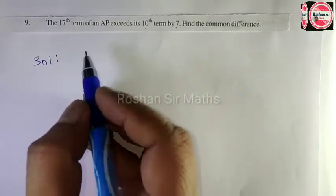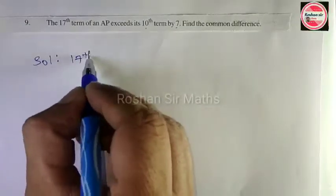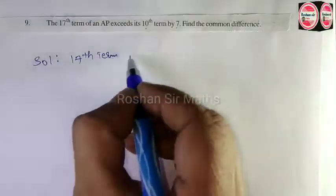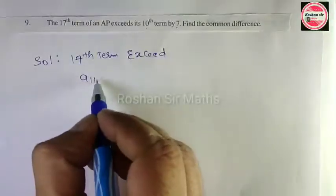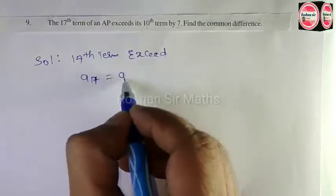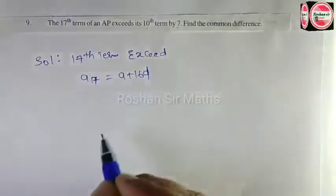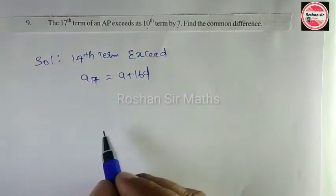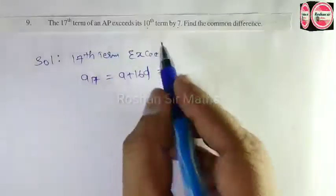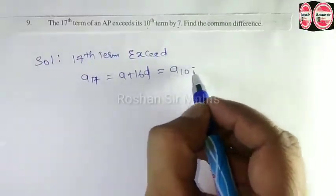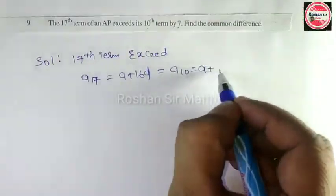17th term exceeds. 17th term is equal to A plus 16D. 10th term is equal to A plus 9D.